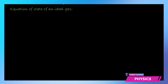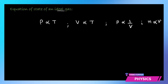Now we find the equation of state of an ideal gas by combining all four laws. P is directly proportional to T, volume V is directly proportional to T, pressure and volume are inversely proportional, and the number of particles is proportional to V. Combining all four, you get that P times V over T and n is a constant.